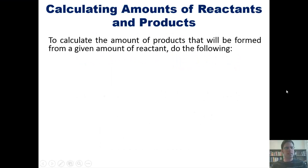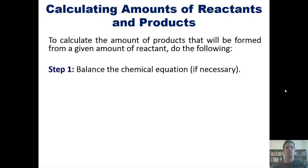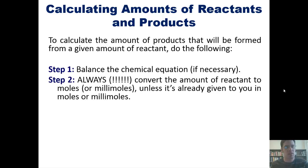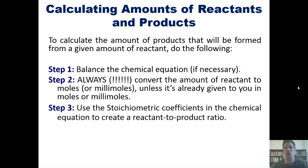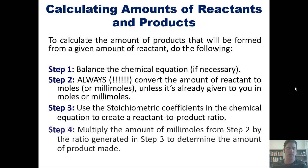Let's go ahead and get started. To calculate the amount of products that will be formed from a given amount of reactant, you must do the following. First, balance the chemical equation, unless you've already done it. Second — always, and I put six exclamation points here — convert the amount of reactant into moles, or millimoles if you prefer, unless it's already given to you in moles or millimoles. Always, always convert to moles. Third, use the stoichiometric coefficients in the chemical equation to create a reactant-to-product ratio. And fourth, multiply the amount of millimoles or moles from step two by the ratio in step three to determine the amount of product made.